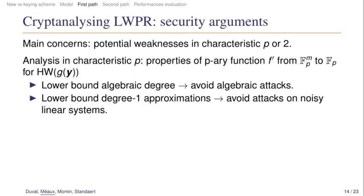For the analysis modulo p, we consider the properties of the p-ary function from Fp^m to Fp. As seen in the previous slide, in the case p equals 3, when p is close to 2^31, the parameter we chose, we can show a lower bound on the algebraic degree of this function. So it means an attacker would have to solve a high degree system. In this case it prevents algebraic attacks. And we can also show that there is no good linear approximation of this function, so it is a way to avoid the attacks based on solving a noisy linear system, like the ones which are used to solve the learning parity with noise problem.